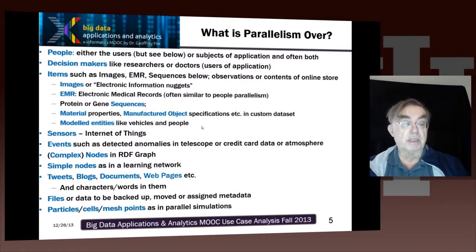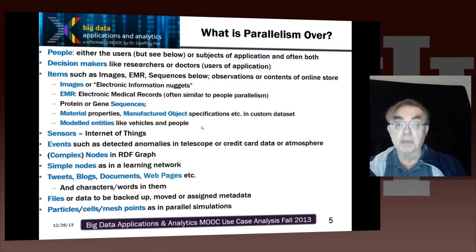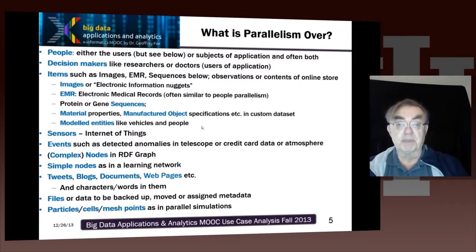A critical thing over which there is parallelism is items. For many applications involving images, you have parallelism over images. Electronic medical records — which actually tend to be related to people — gene sequences, material properties, and manufactured object specifications are custom data sets running over a particular field. Another example we find is parallelism over things that are being modeled, like vehicles and people.